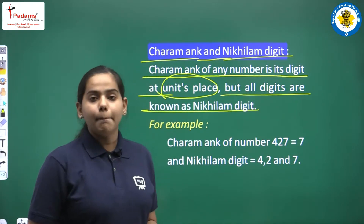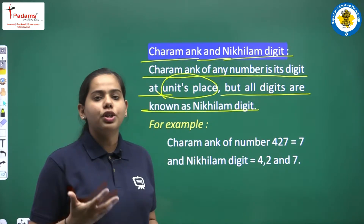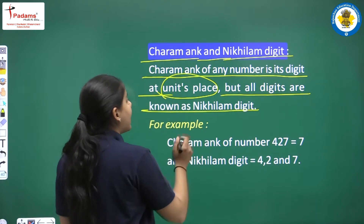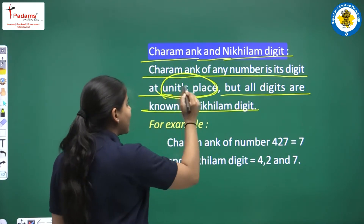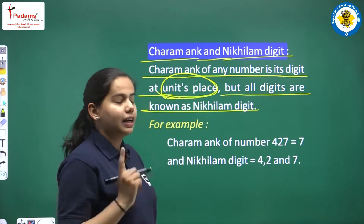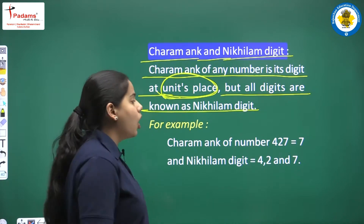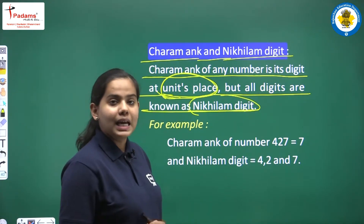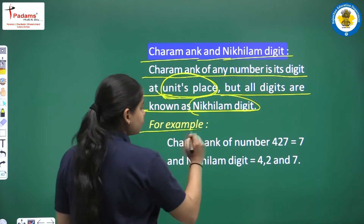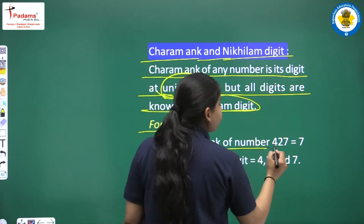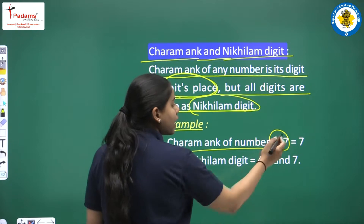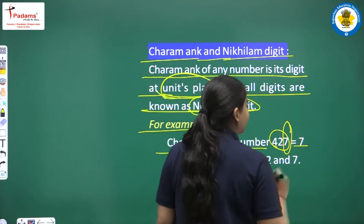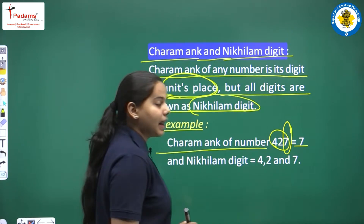It means that any number has 3 digits, 4 digits, 5 digits and so on. What is Charam Ankh? It is the digit at units place. And Nikhilam Digit is the rest of all digits in that number. For example, Charam Ankh of number 427 — in 427, the digit at units place is 7. So 7 has become Charam Ankh.